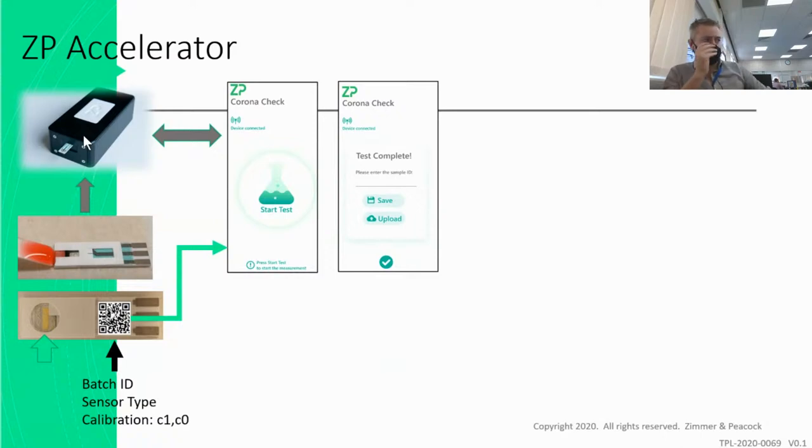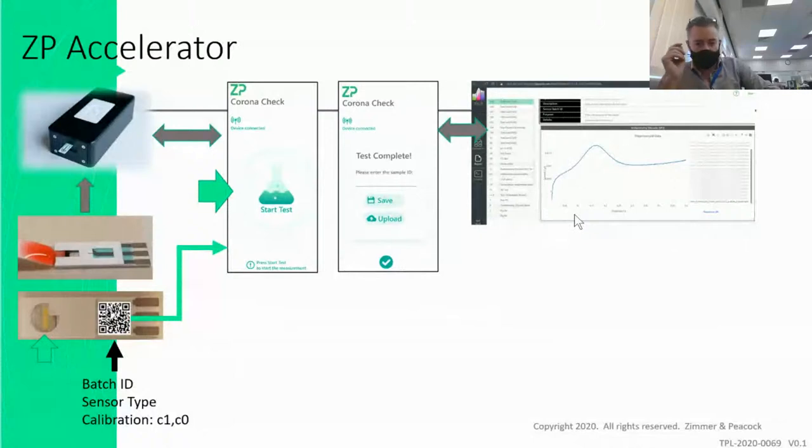Now the way the electronics work is the app will connect to the meter by Bluetooth, and the meter will collect the data, and then the data will be transmitted back to the app. So if you were in a program with us, you could then hit upload and essentially then it would send the data to the cloud. So at Zimmer and Peacock we have something called Julie. Julie is a cloud database and it will send the raw data to the cloud. So keywords here: sensors, electronics, apps, and cloud. And so we have this infrastructure already existing at Zimmer and Peacock.